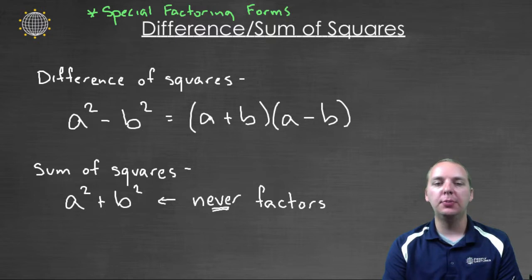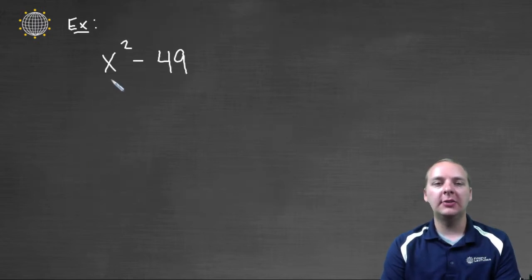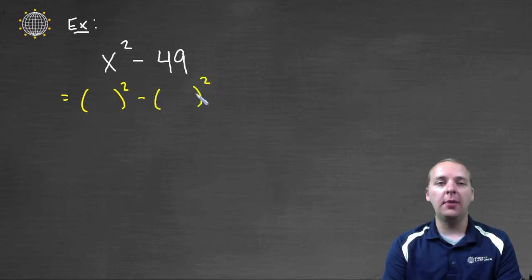We'll look at a few simple examples. Let's say we have x² - 49. The first thing you want to do is write some empty parentheses so you can figure out what your a and b are. For this one, it's pretty clear that x² gives us x², and 7² gives us 49.